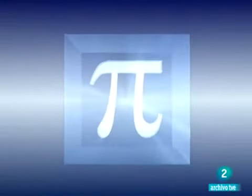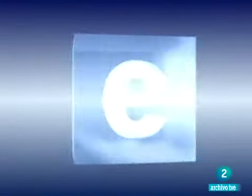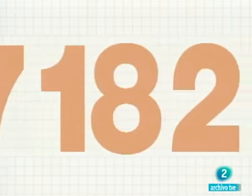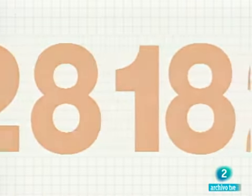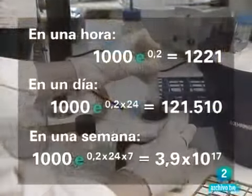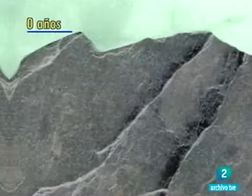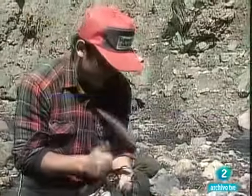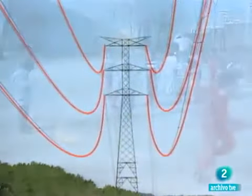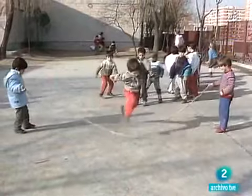Otro número de apariencia extraña y también con nombre de letra es el número E, la base de los logaritmos neperianos. Otro número irracional con infinitas cifras decimales. 2,7182818. Un número que aparece cuando queremos cuantificar el crecimiento de una epidemia, cuando hacemos la prueba del carbono 14 para datar un resto arqueológico y hasta en los cables de la luz. Un número que Euler llegó a calcular con 23 decimales.